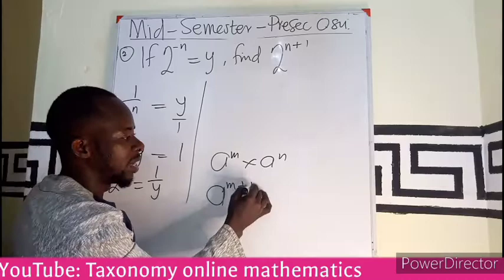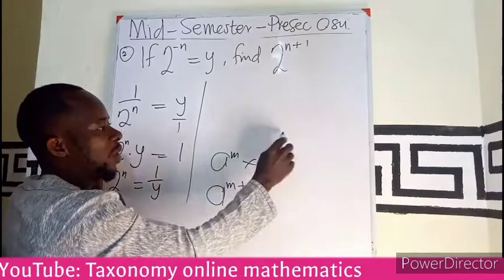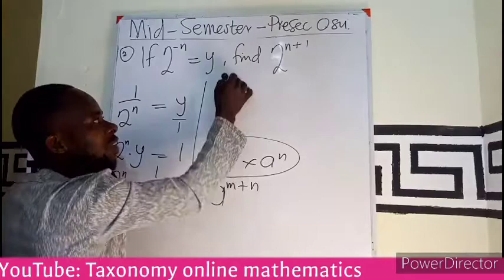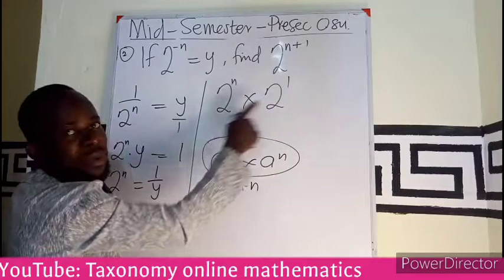So it means that there was a term multiplying that has been added to give us this. That would be 2 exponent n, which is our n here, times 2 exponent 1. The base must be the same before I can add the exponent to get this.